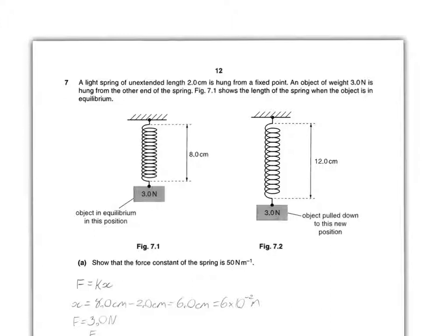Question 7 states, a light spring of an extended length 2cm is hung from a fixed point and an object of weight 3N is hung from the other end of the spring. Figure 7.1, which is this one, is in equilibrium, which is shown here.